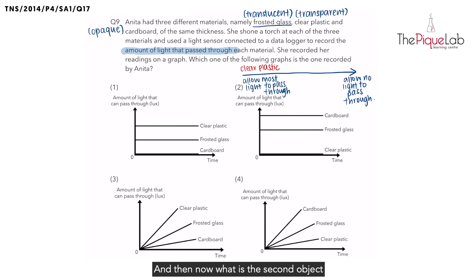And now, what is the second object that would allow some light to pass through? It would be the translucent material, in this case, the frosted glass. And finally, which object allows no light to pass through? That is our cardboard, which is opaque.